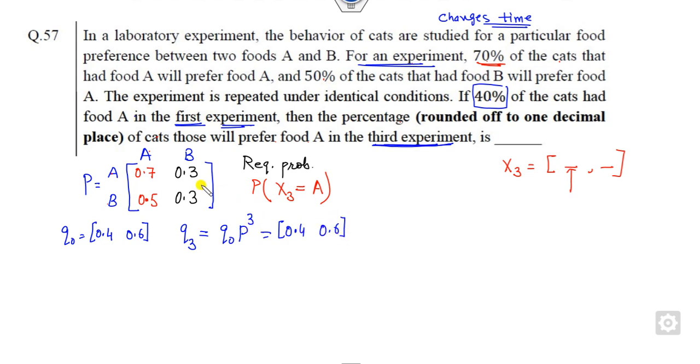Now you can find P cubed. Once we know P, you can use the calculator. You can find P squared. What is P squared? It is 0.7, 0.3, 0.5, 0.3 and again 0.5, this 0.3 here.